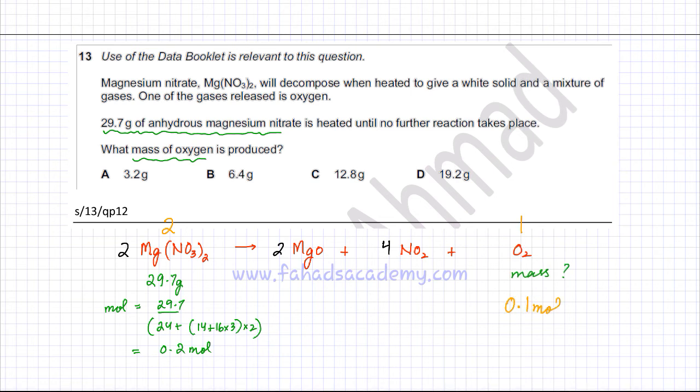We need to find the mass of 0.1 moles of oxygen. So mass equals moles, which is 0.1, multiplied by the MR of oxygen, which is 16 plus 16, that's 32. So it's going to give you 3.2 grams. That's the mass of oxygen that would be obtained in this reaction. So option A is correct.